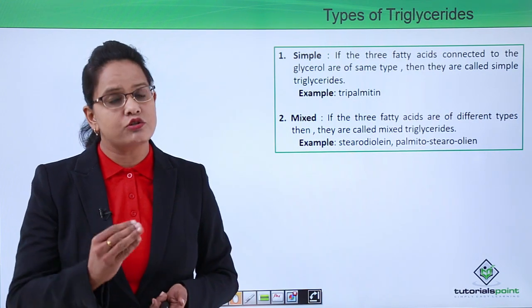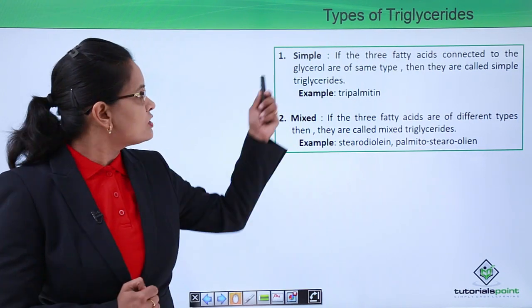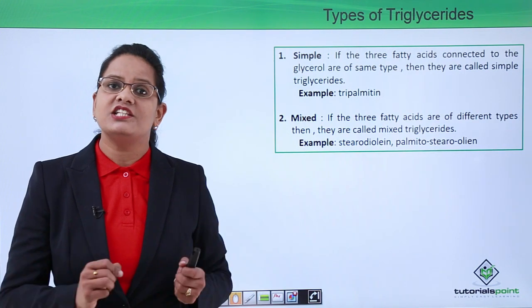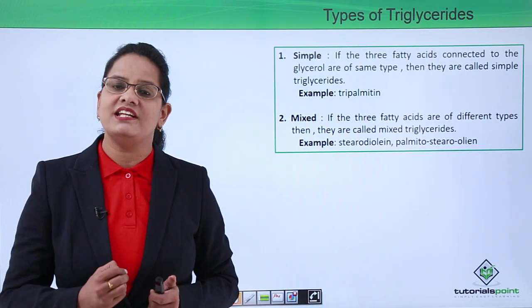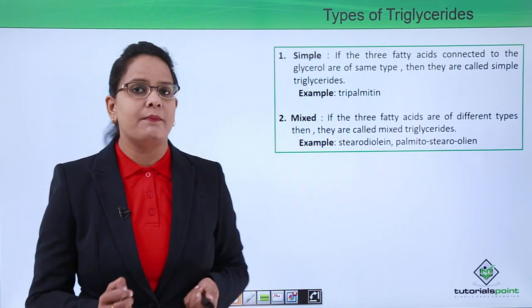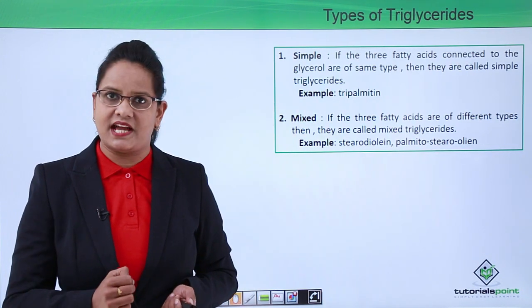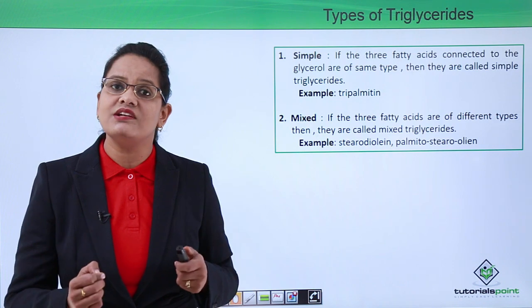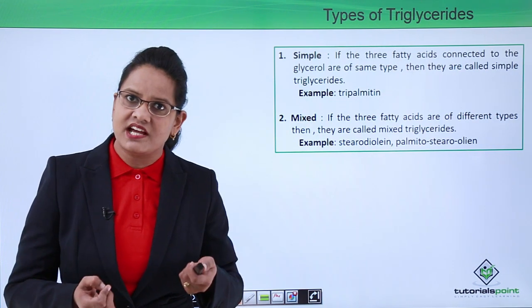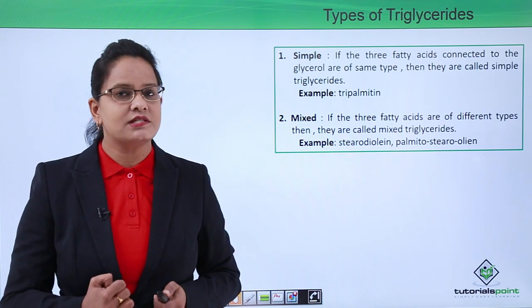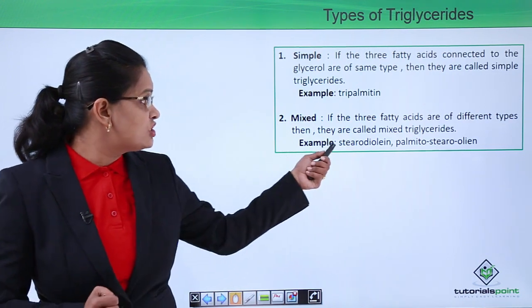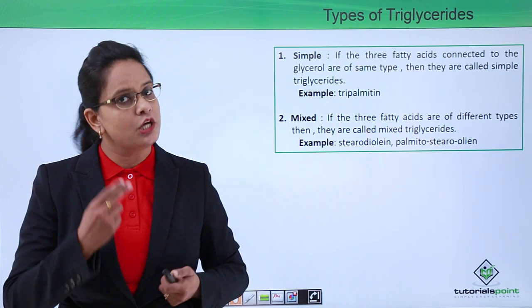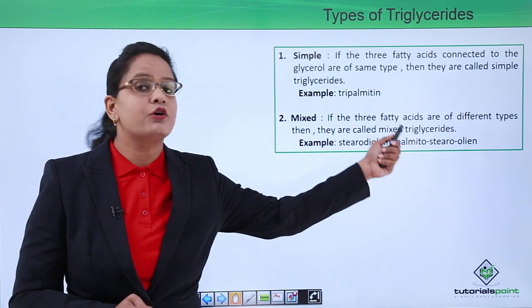Next, how many types of triglycerides are there? Simple triglyceride means they have one type of fatty acids - the three fatty acids are the same. Example is tripalmitin. Mixed means the three fatty acids can be different, or two fatty acids can be the same and one different. Examples are stearodioleate, palmitostearooleate, which has palmitic acid, stearic acid, and oleic acid.